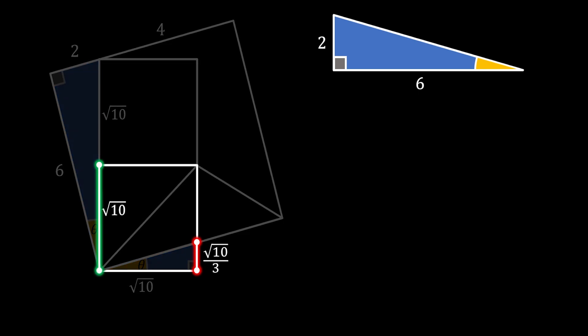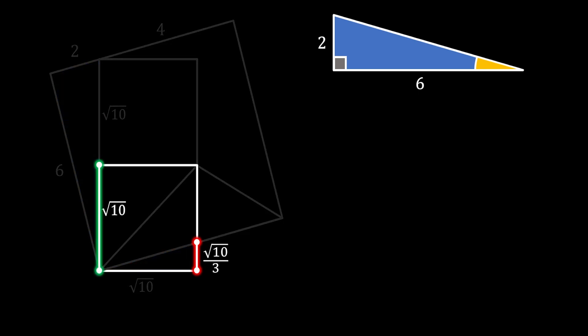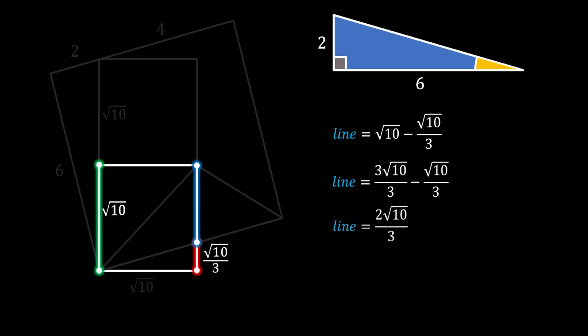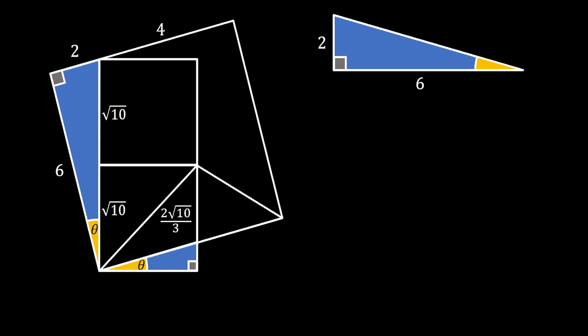Clearing the image, we see the remaining length of the height of the smaller square — labeled as the blue line — equals the difference between the height of the square and the height of the smaller triangle. Expanding to get a common denominator, we find this blue line has length 2√10 / 3.